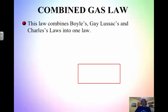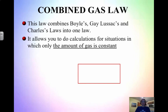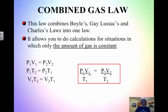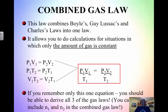The last gas law combines Boyle's, Gay-Lussac's, and Charles' Law into one. It allows you to do calculations for situations in which only the amount of gas is constant. When we take all the gas laws and combine them, you get P1V1/T1 = P2V2/T2. If you remember only one equation, this is the one — you can derive any of the three individual laws from the combined gas law.